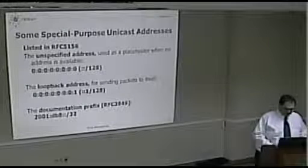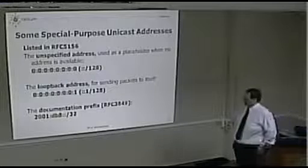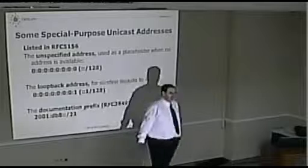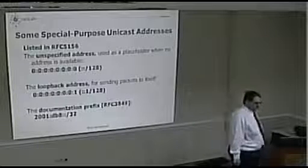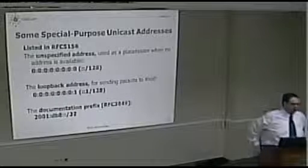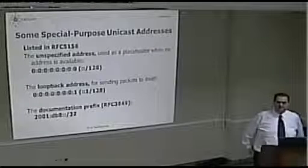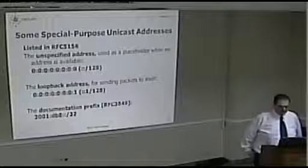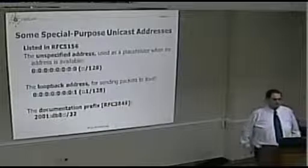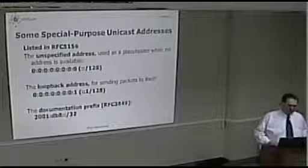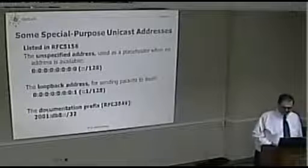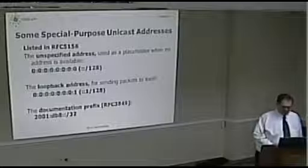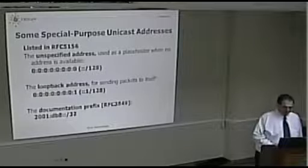Some special-use addresses: the 2001:db8::/32 prefix is what's called the documentation prefix. Many documents, books, and workshops use that prefix to number example networks. It shouldn't be present or routed on the internet.